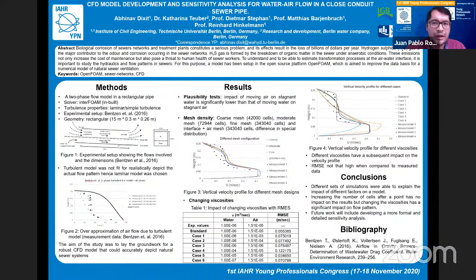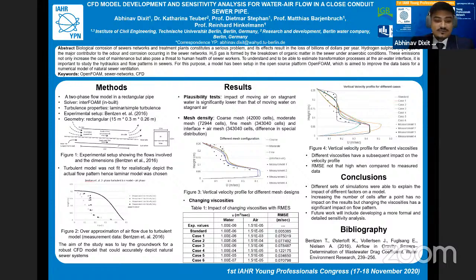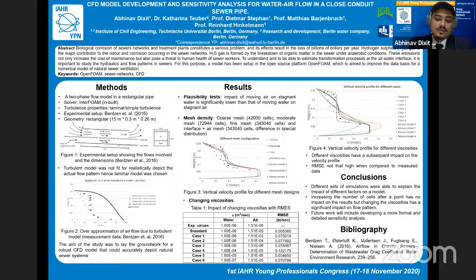Thank you for giving me this opportunity to present. My topic is CFD model development and sensitivity analysis for the air flow in a closed conduit sewer pipe. Biological corrosion of sewer networks and treatment plants constitutes a major problem for asset management, resulting in a loss of billions of dollars every year. Hydrogen sulfide gas is a major contributor to the odor and corrosion occurring in sewer networks.